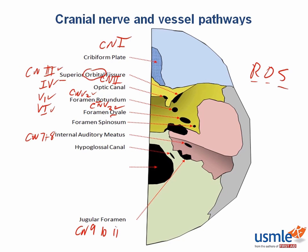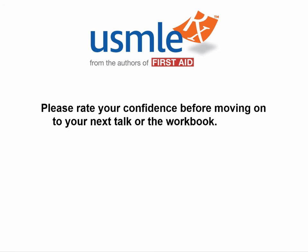The hypoglossal canal is the small hole in the occipital bone through which cranial nerve 12 passes. Last, but far from least, is the foramen magnum, which is the exit point for the brain stem, the vertebral arteries, and the spinal roots of cranial nerve 11.